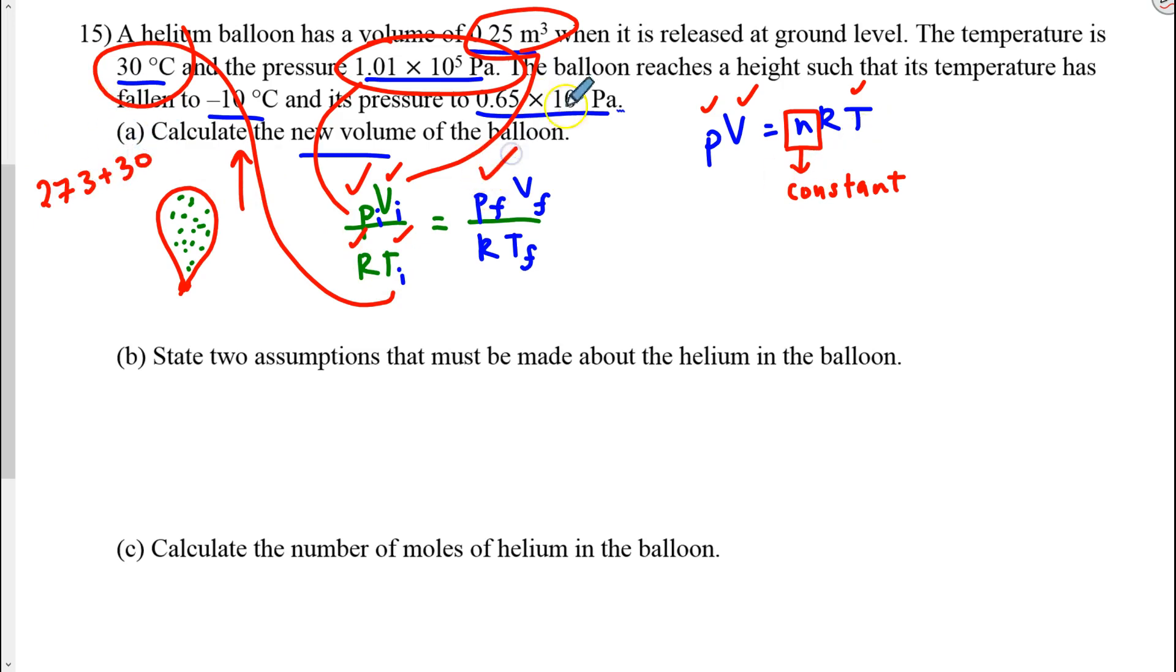And we also know the final pressure. That's this value here. We know R again, although the R's cancel, don't they? We know the final temperature, negative 10, but we have to add 273. So we can go find the final volume.